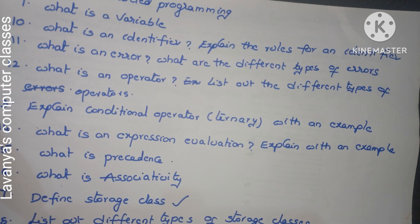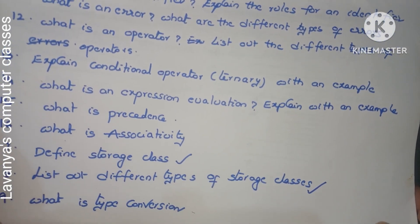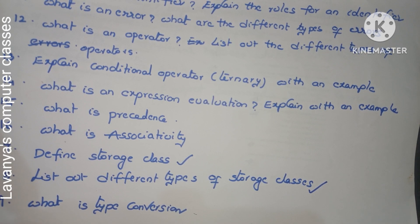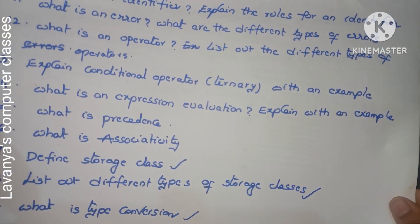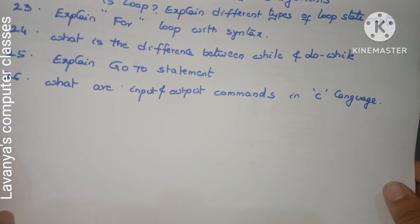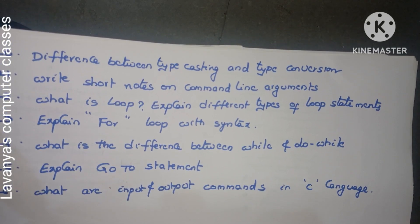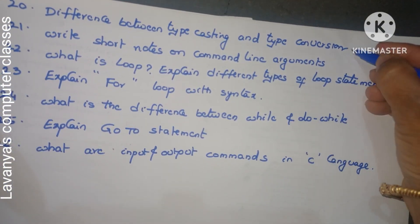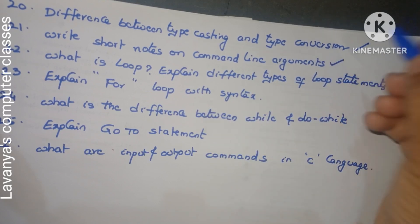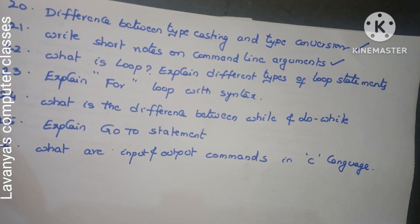List out the different types of storage classes. If you just mention the names of the storage classes, it is sufficient for a short answer question. If you explain each storage class in detail, that comes under SI-type questions — very very important questions. Next: what is type conversion? This is also a very important question. Next: the difference between type casting and type conversion — this also belongs to type conversion. It is an important question. Write short notes on command line arguments — very very very important question.